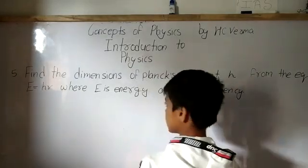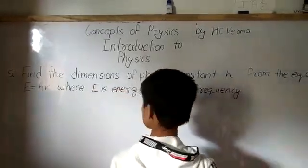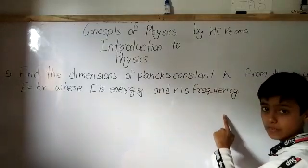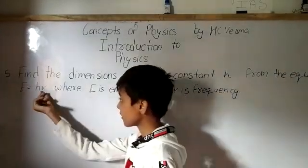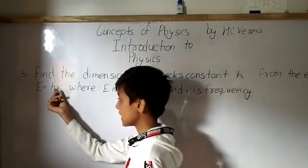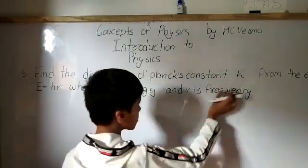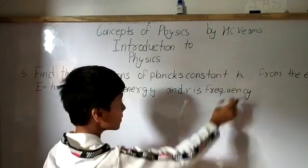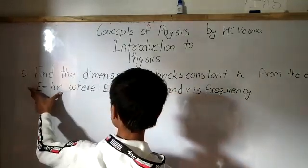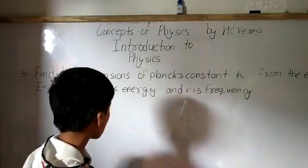Question number 5: Find the dimensions of Planck's constant H from the equation E equals H nu, where E is energy and nu is frequency. This letter nu is written as V but is called 'nu'. We have to find the dimensions of Planck's constant H from this equation.